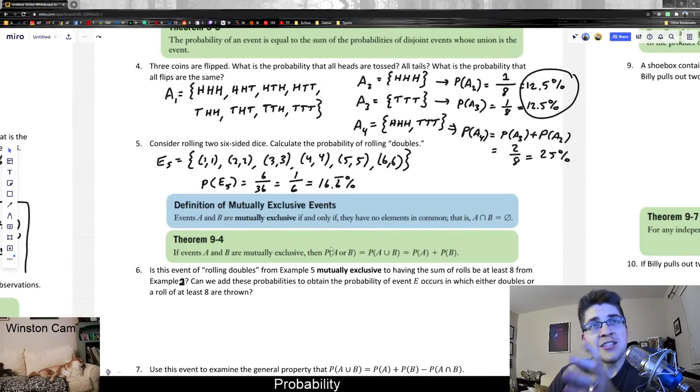Because it says basically the probability of this or this occurring, which was kind of that last question we answered - what's the probability that all flips are the same? Basically either all heads or all tails. And remember that when we're using the or operation, logically speaking, that always translates to a union of the two sets.